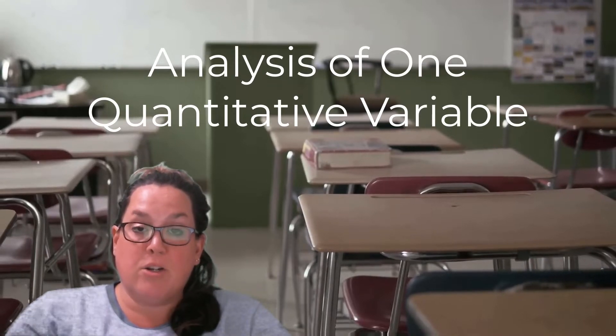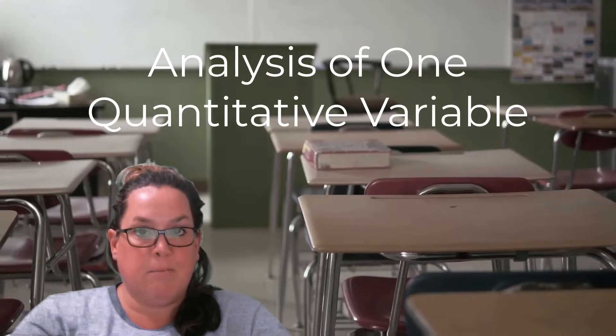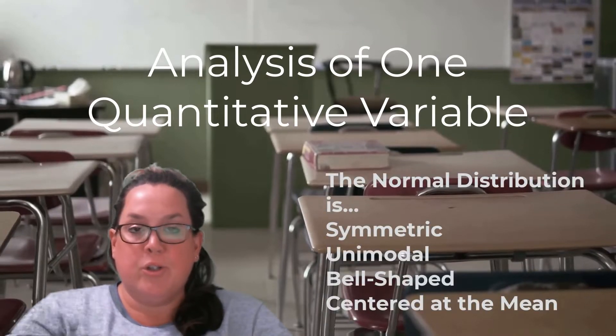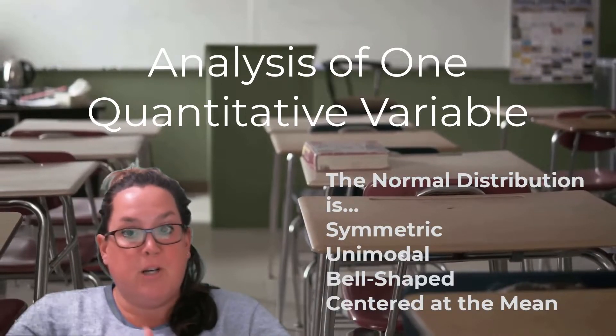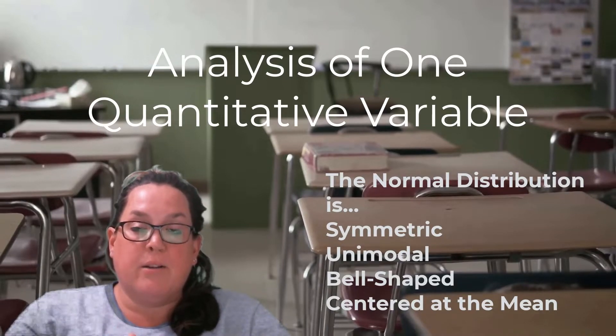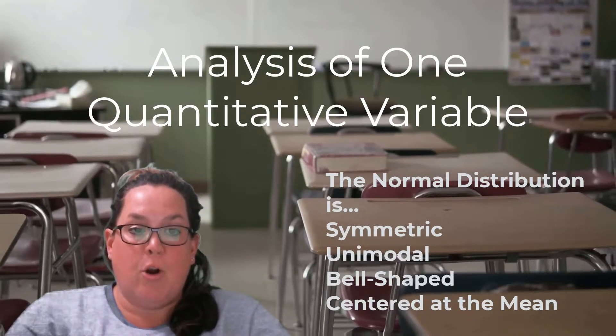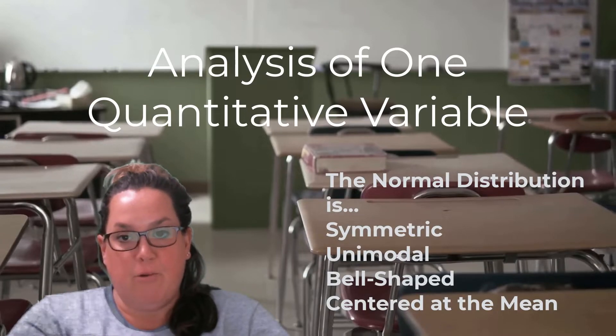So then we continued on and talked about the normal distribution and some characteristics of it, which includes that it's symmetric, it's bell-shaped, it's unimodal. Technically, the lower and upper bound are negative and positive infinity respectively.